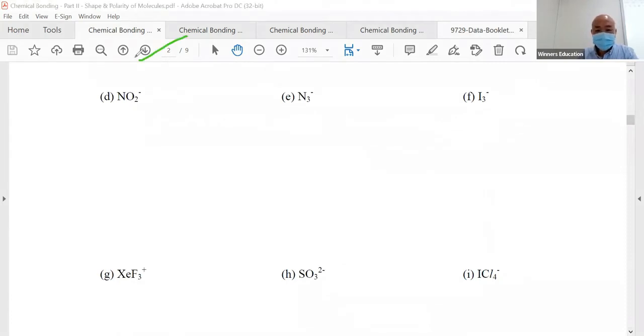So here we go, I3-. What is this I3-? It's iodine, three of them. What do we do? We say iodine has seven valence electrons times three. Don't forget there's a negative charge, so electron plus one. Total number you have is 22, which is an even number.